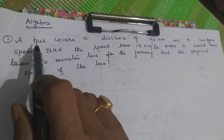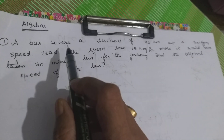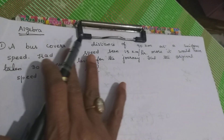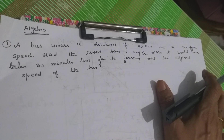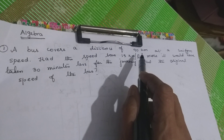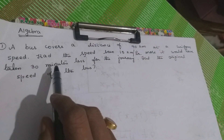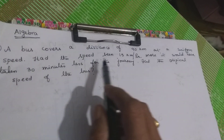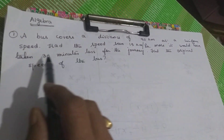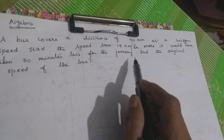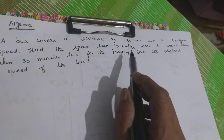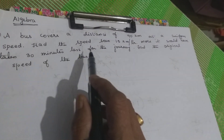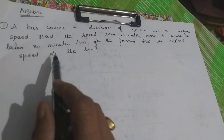In this session, we are going to see algebra — some more problems. First one is: a bus covers a distance of 90 km at a uniform speed. Uniform speed means it goes at a constant speed. Had the speed been 15 km per hour more, it would have taken 30 minutes less for the journey. Find the original speed of the bus.